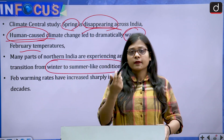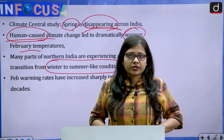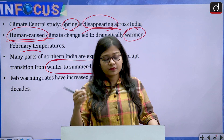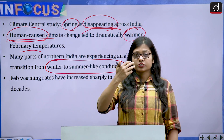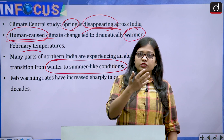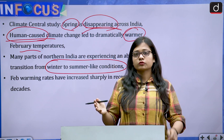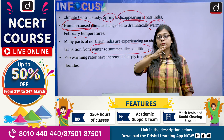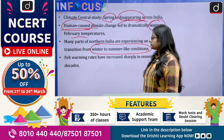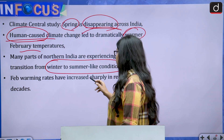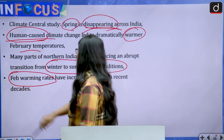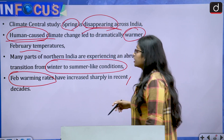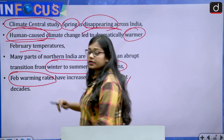For example, December and January are supposed to be winter months, then February and March are supposed to be spring months, followed by summer. But nowadays temperatures are increasing in February and March itself, leading to the disappearance of the spring season that used to come between winters and summers. February warming rates have increased sharply in recent decades — a decade being a span of 10 years — according to the Climate Central study.